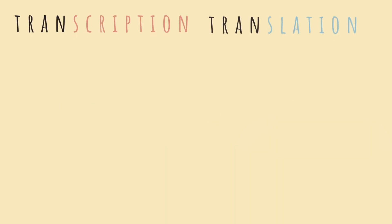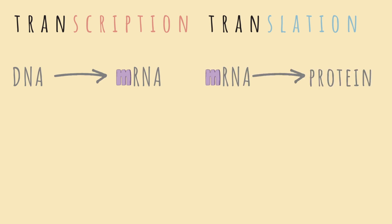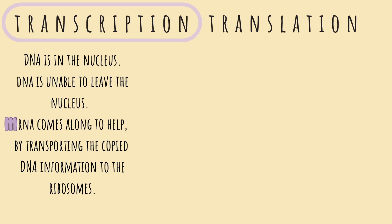There are two major steps in protein synthesis: transcription and translation. Basically, transcription is where DNA makes mRNA, and translation is where mRNA makes proteins. DNA is in the nucleus and is unable to leave, but it somehow needs to send its information to the ribosome so it can make proteins. mRNA comes along to help by taking a copy of DNA's information and transporting it to the ribosome — hence why mRNA is the messenger.